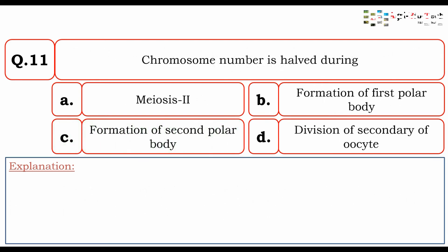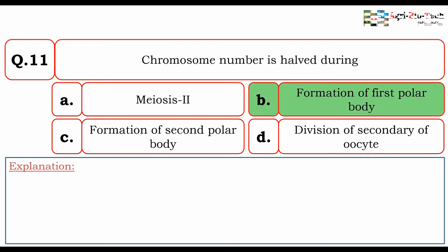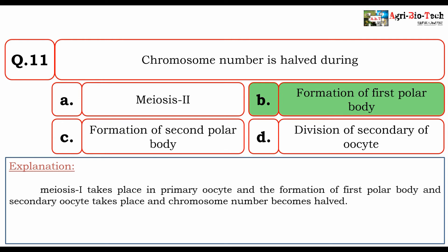Next question: chromosome number is halved during — meiosis 2, formation of first polar body, formation of second polar body, or division of secondary oocyte? The correct option is B: formation of first polar body. During this process, secondary oocyte formation takes place and the chromosome number becomes halved.